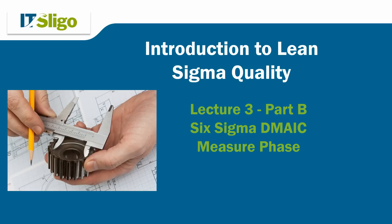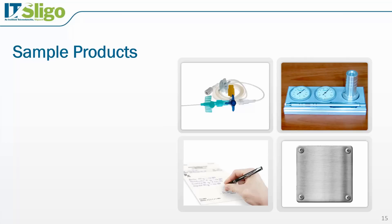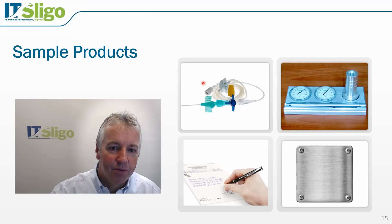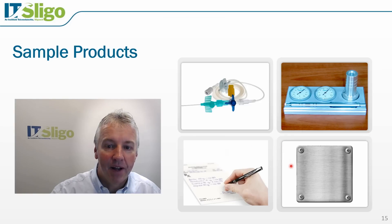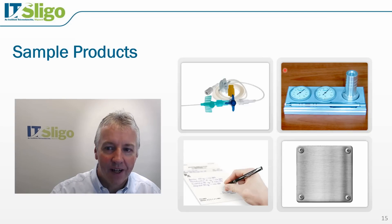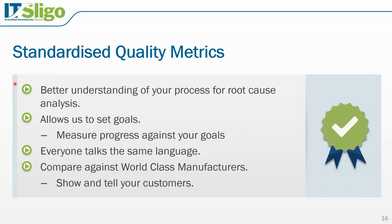Welcome to lecture 3 part B. We're still in the measure phase and we're going to look at some sample products and quality measures. We could use these metrics to measure any quality level of a product, or even a prescription, a metal plate, or the pen holder which we're using as the standard example throughout these lectures. The reason we want standardized quality metrics is that we have a better understanding of our process. If we want to do some root cause analysis and figure out the source of the problem, then having standardized quality metrics allows us to know where we are, set goals, know where we want to be, and then use the tools to get there and measure progress against those goals.